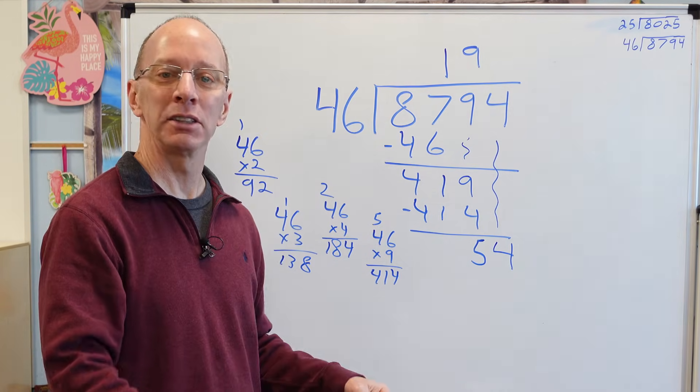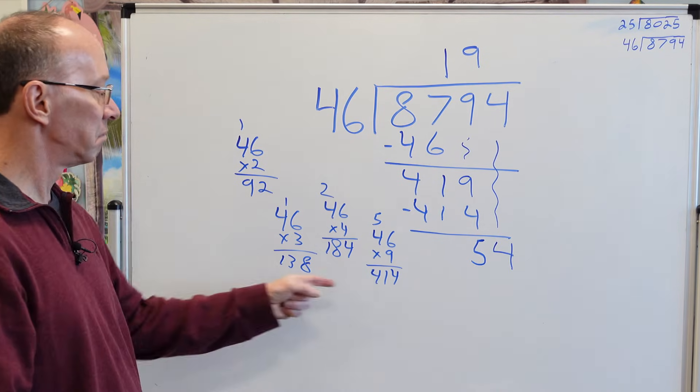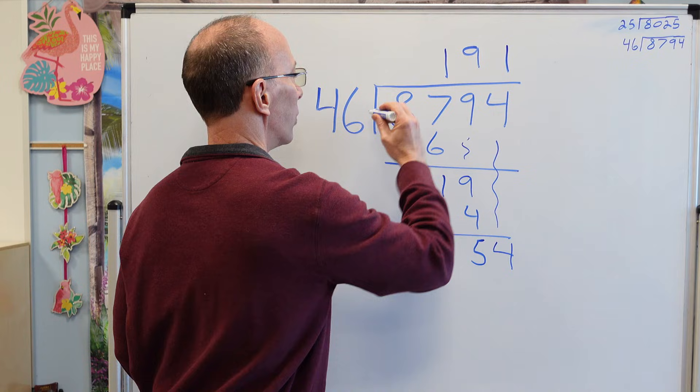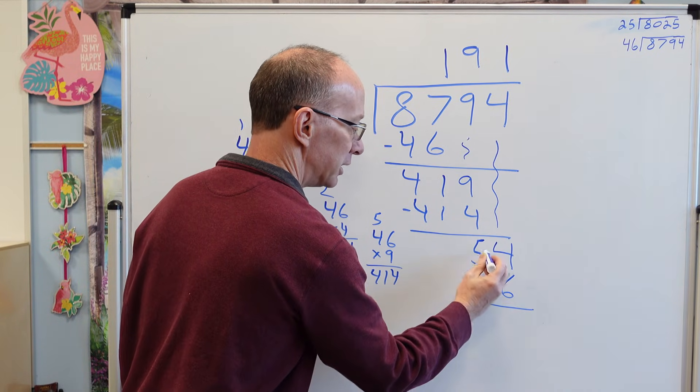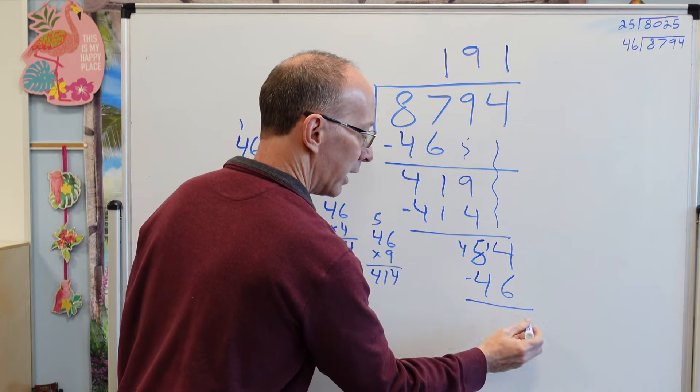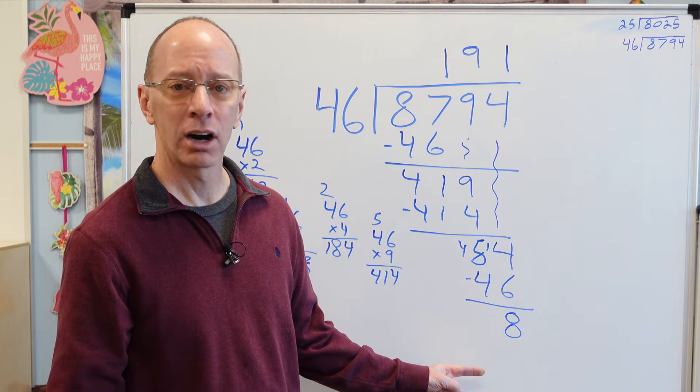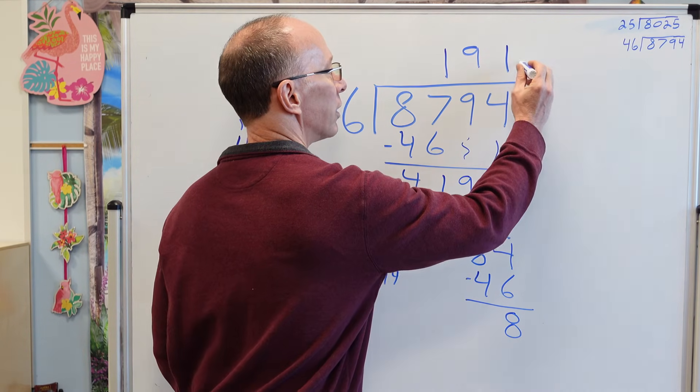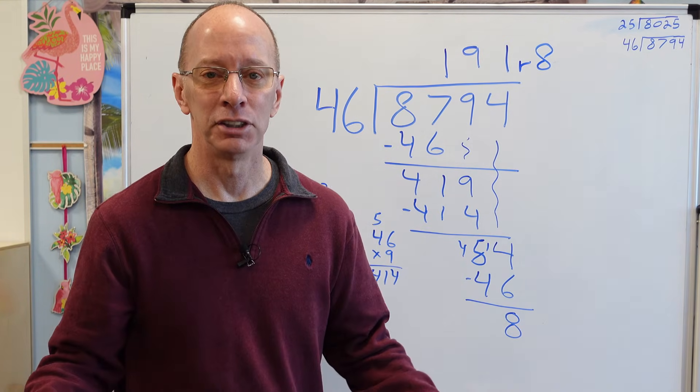Again, we start the whole process over. How many times can I put 46 into 54? Just 1. Just 1. I'm going to put a 1 right there. 1 times 46 is 46. Do a little subtraction. Need to borrow over here. And we have 8. That's our remainder. We don't have any more numbers to bring down. That's our remainder right there. Remainder 8. How'd you do?